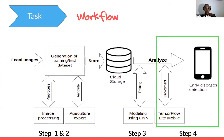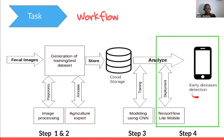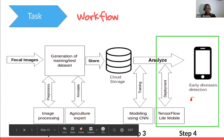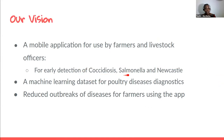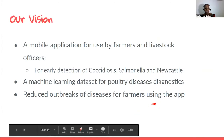We envision deploying the developed model into a mobile application so that farmers and livestock officers can have a tool in the field to rapidly diagnose diseases. Our vision is to have an end-to-end tool for early detection of the three chicken diseases — coccidiosis, salmonella, and Newcastle — and also to produce a machine learning dataset to be shared with the larger AI community for further research. We also envision that farmers using this app will have reduced disease outbreaks. Thank you.